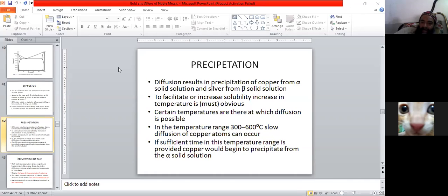Diffusion results in precipitation of copper from alpha solid solution and silver from beta solution. So when diffusion happens, precipitation can also occur.